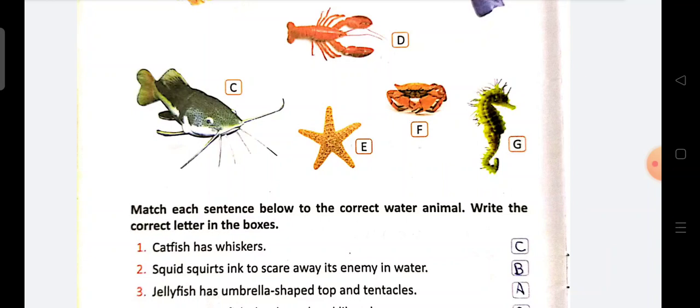Aap dekho beta. Yeh fish. Fish ka shape hai. Fish hai yeh. But its ka naam catfish hai. To iski whiskers hai. So aap dekhi point number C. Next point number 2.